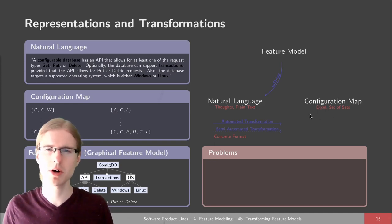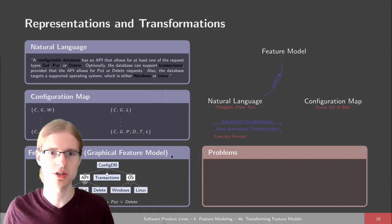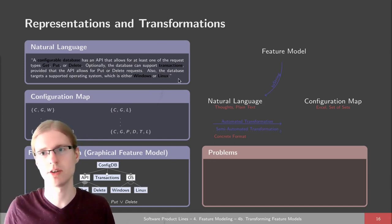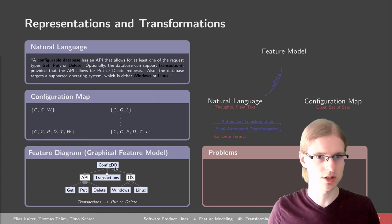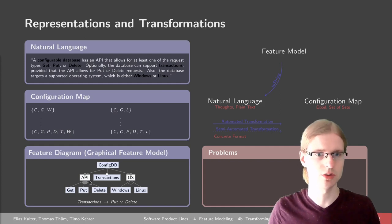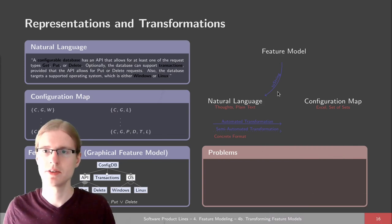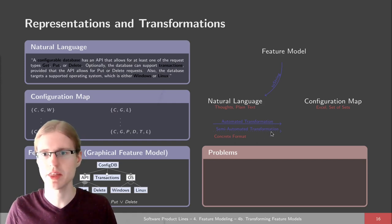We can also think about how these feature model representations can be translated into each other. For example, we could imagine a graphical feature model and transform it into natural language with a simple algorithm that takes each feature, lists it with its child features, and shows what relationship they have. Some of these transformations are relatively easy to implement and automate, and others maybe not.